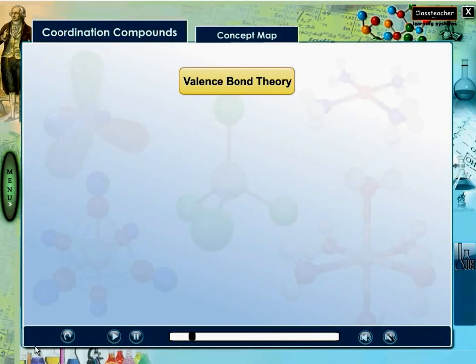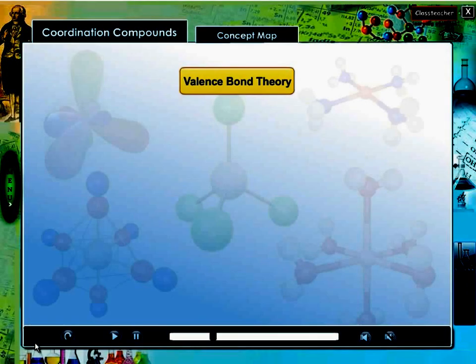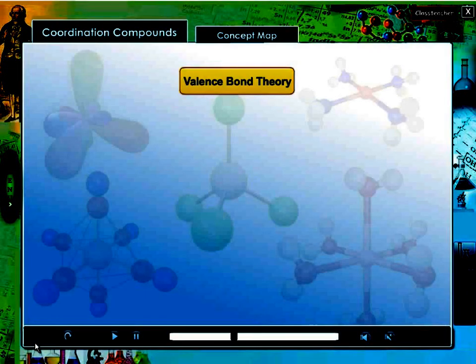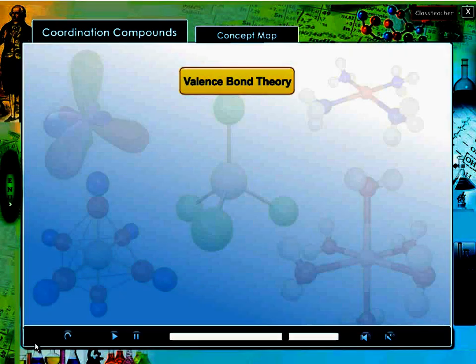Bond theory predicts metal complex bonding arises from overlap of filled ligand orbitals and vacant metal orbitals.